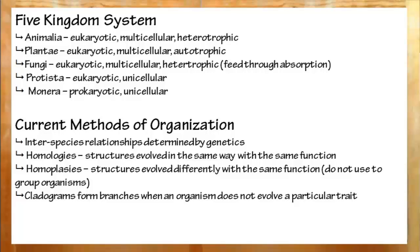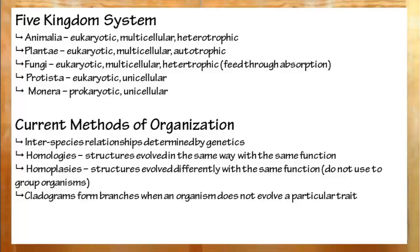Do not use homoplasies, though. These are similar structures that perform similar functions, but the overall workings — how they are made — are usually different. We can construct a cladogram based on different criteria such as jaws, skeleton, lungs, feathers, and so on — evolved traits, if you will. Moving along the cladogram, every time we can eliminate a certain taxon because it did not evolve a trait, we simply create a branch and put it there.